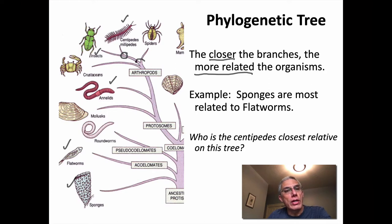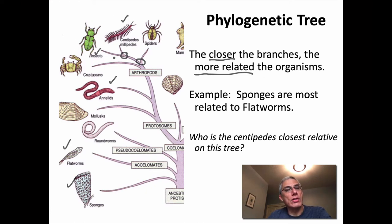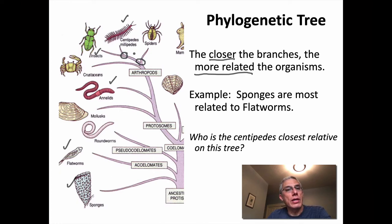The node connecting spiders — the arachnids, or chelicerates — connects them to the group of insects, centipedes, and millipedes. There is more evolutionary distance between them. You really have to pay attention to where those nodes are to see how closely related two groups are to each other.